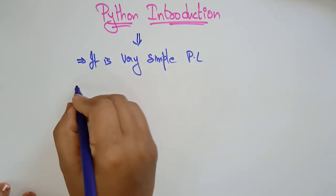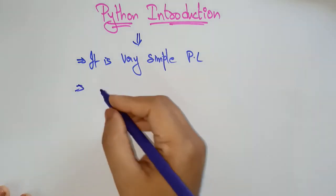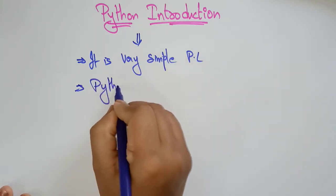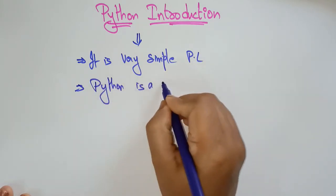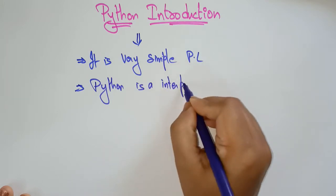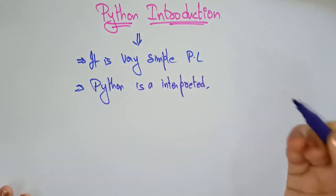Now, the Python is an interpreted. We call it as a Python is a interpreted and object oriented. It is an object oriented also.